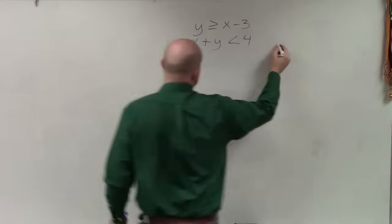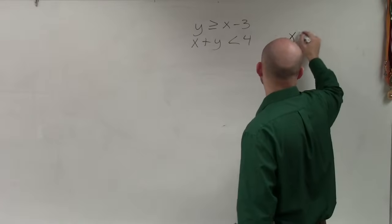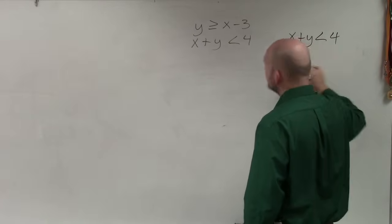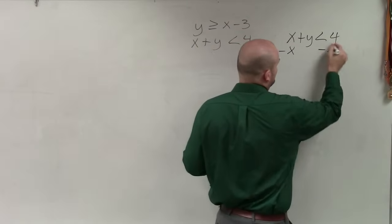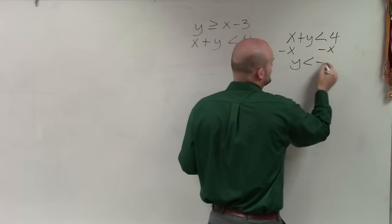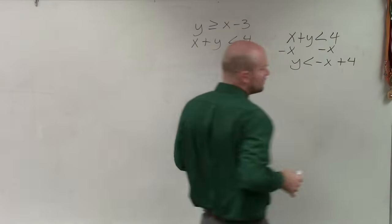So this one I'm going to rewrite as x plus y is less than 4. And to go ahead and graph this, I'm going to want to write this in slope-intercept form. So I'll subtract an x. So I have y is less than negative x plus 4. Now remember, when graphing with a negative 1 as your slope, when you have a negative x.